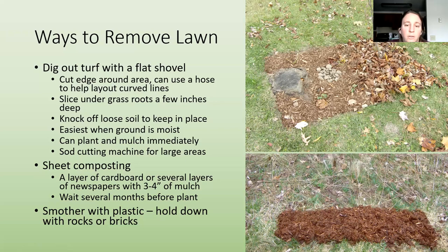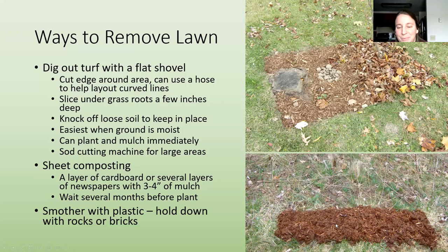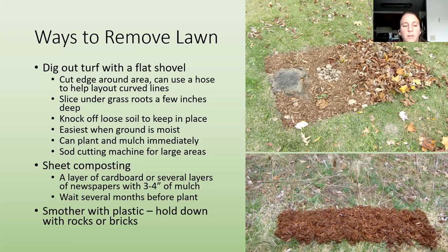There is a sod cutting machine you can use for large areas. Sheet composting is another method — you put down a layer of cardboard or several layers of newspaper with three to four inches of mulch on top, then let that decompose underneath. Usually give it several months — do it in spring or summer and then plant in the fall, or put it down in the fall and plant in the spring.